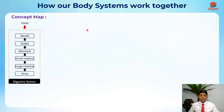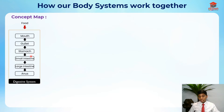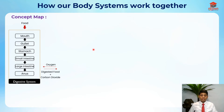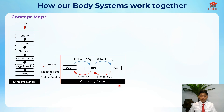First, the digestive system: we eat food through our mouth, it goes through our gullet and liver, then the stomach, then the small intestine, then the large intestine, then to our anus where food is eventually passed out. Now let's look at the circulatory system. It starts at the lungs — before this we inhale air, so we have oxygen entering.